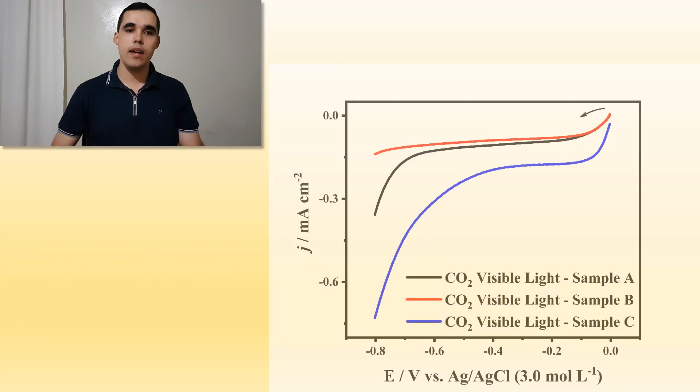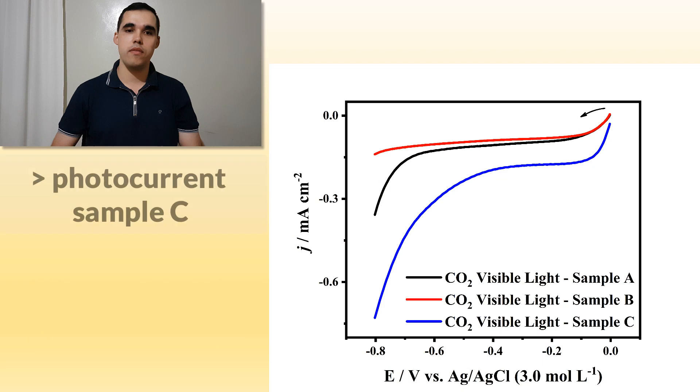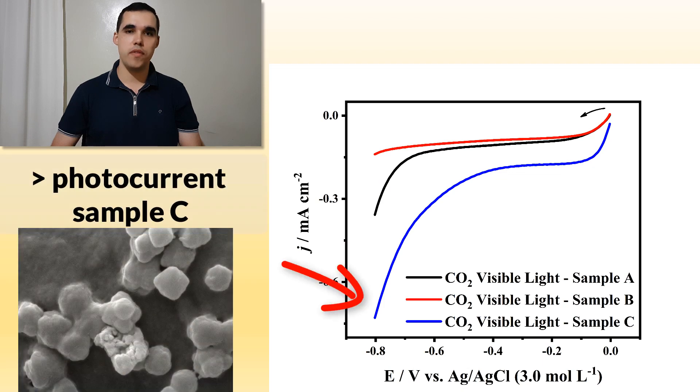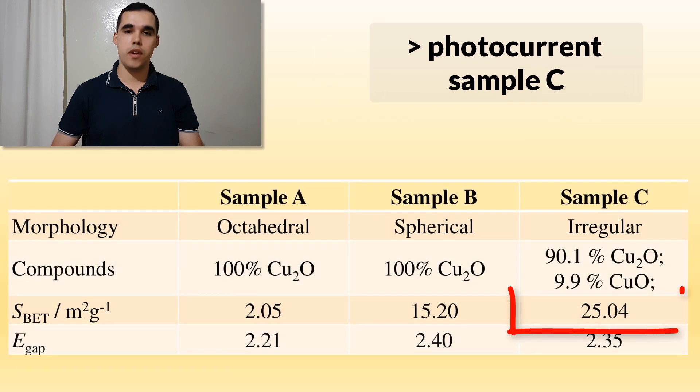However, the highest photocurrent was observed for the electrode covered with sample C. This fact can be related to the largest specific area of the sample when compared with sample A and B.